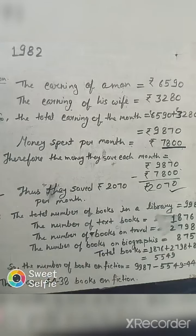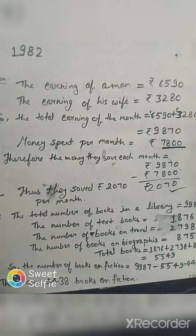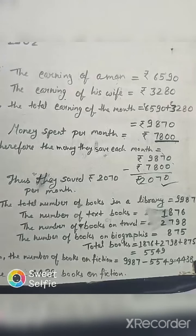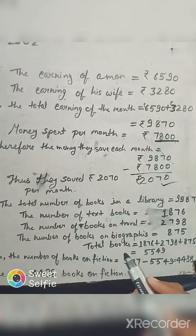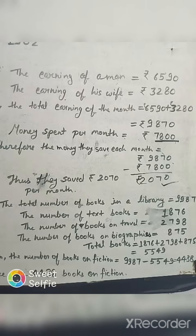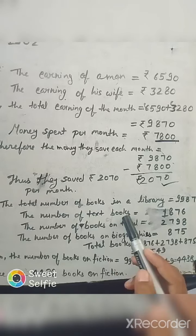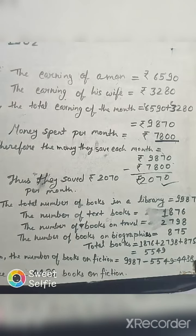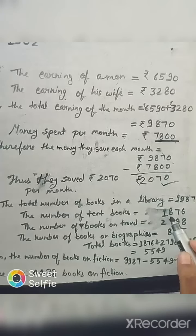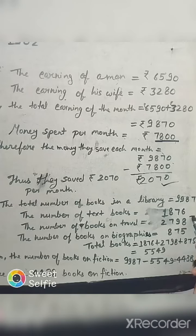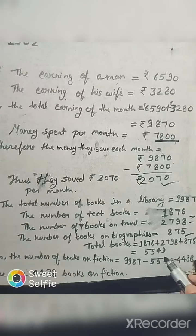Let's see the solution. The total number of books in the library is 9987. The number of textbooks is 1876. The number of books on travel is 2798. And the number of books on biographies is 875. To find the total of textbooks, travel and biographies, we will add all these numbers: 1876 plus 2798 plus 875. After adding these three numbers we get 5549.